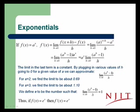Using some algebra, we can factor out an a to the x, leaving us with the limit as h goes to zero of a to the h minus 1 times a to the x over h.